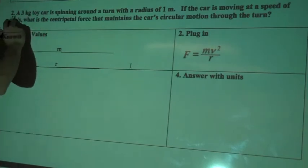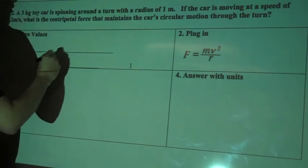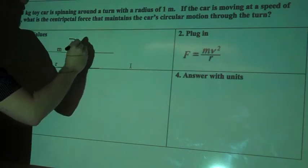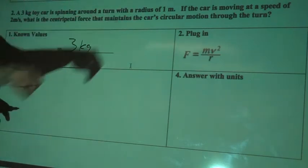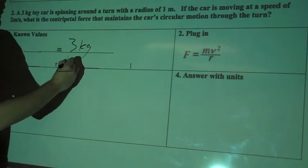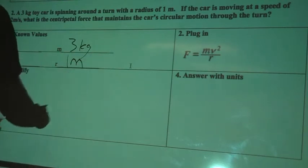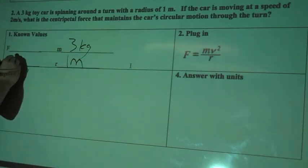So let's plug in our values. We know it's a three kilogram toy car, so mass is going to be three kilograms. I know it's spinning around a turn with a radius of one meter, so my radius will be one meter. The car is moving at a speed of two meters per second, so that's my velocity.